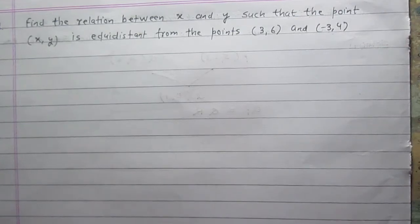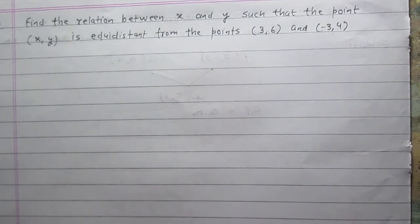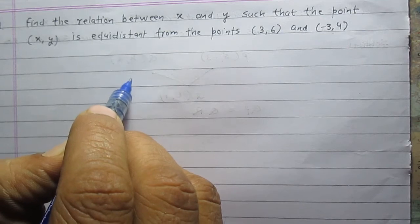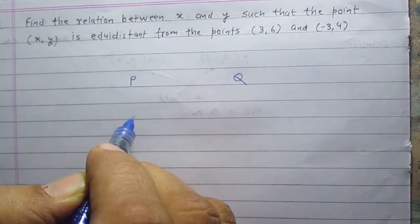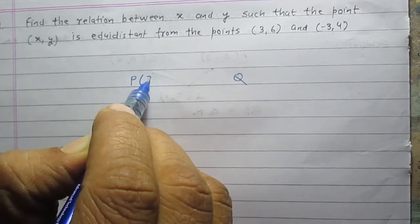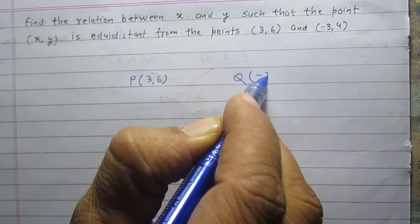Find the relation between x and y such that the point with coordinates x and y is equidistant from the points with coordinates 3 and 6, and minus 3 and 4. In this question we are given three points. Out of these three points, two points have given coordinates. Let us consider these two points as point P and point Q. Point P has coordinates 3 and 6, and point Q has coordinates minus 3 and 4.